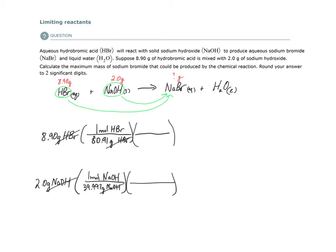I use the coefficients. I pull the coefficients from the balanced equation. The coefficients are one mole of HBr produces one mole of NaBr. Here, one mole of NaOH yields one mole of NaBr. All the coefficients are one.